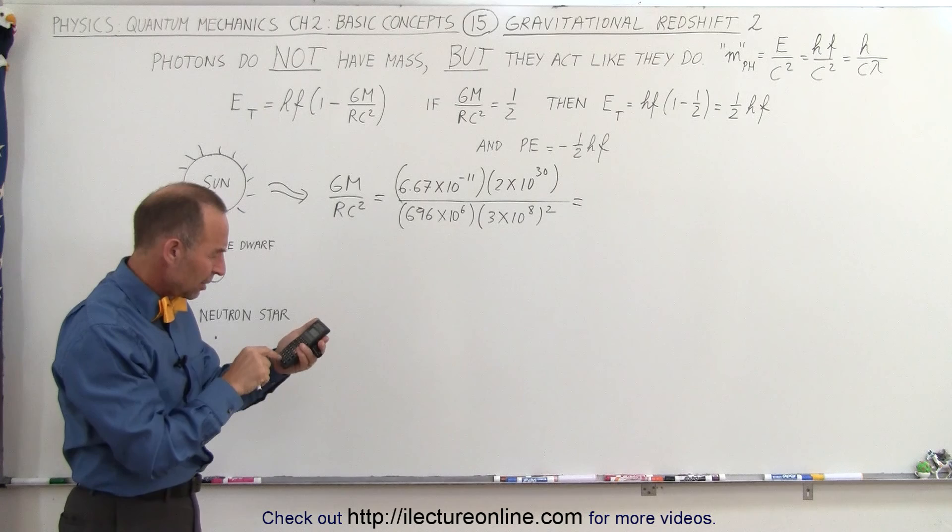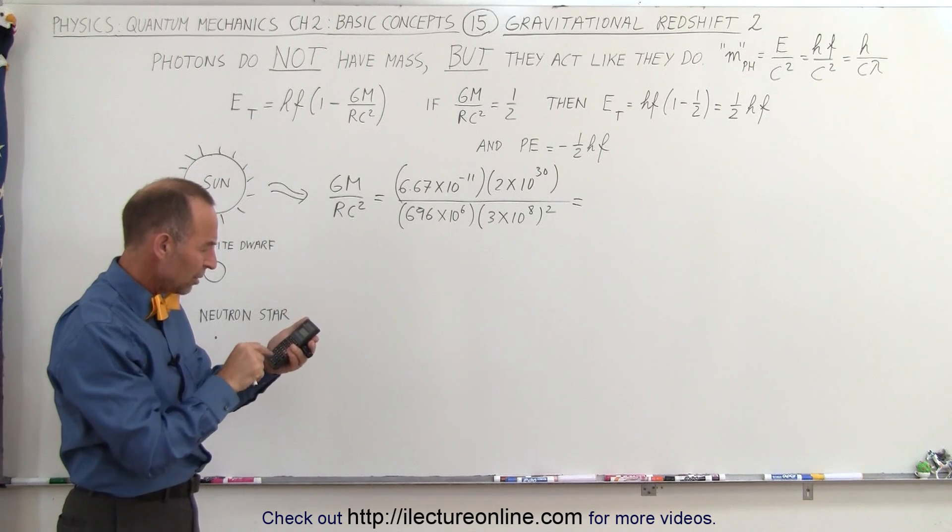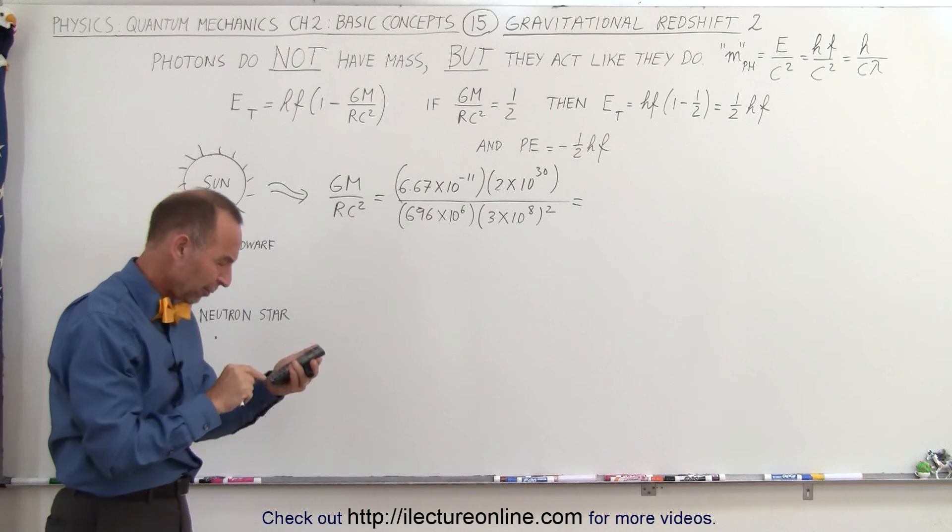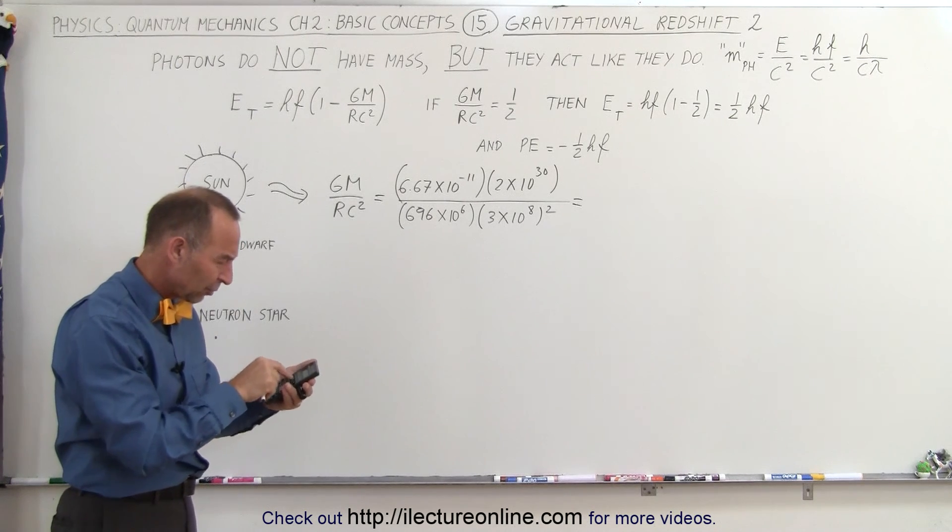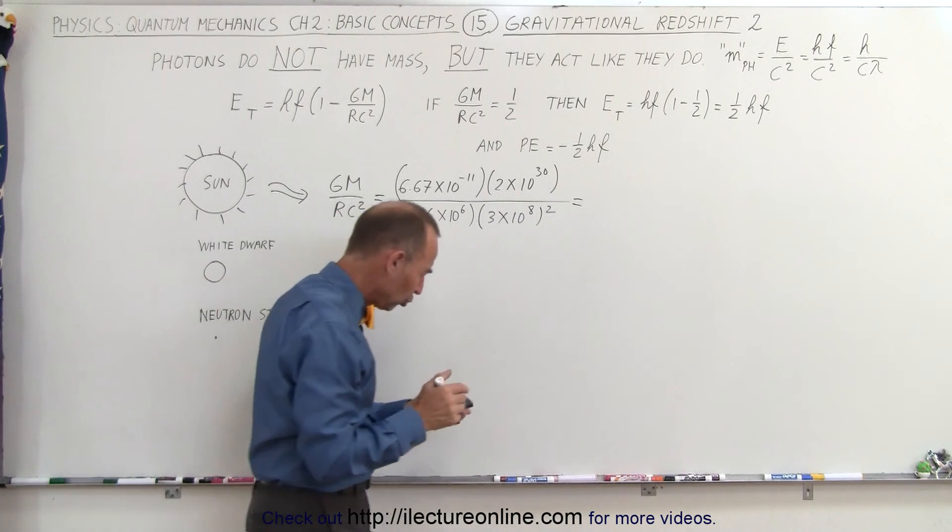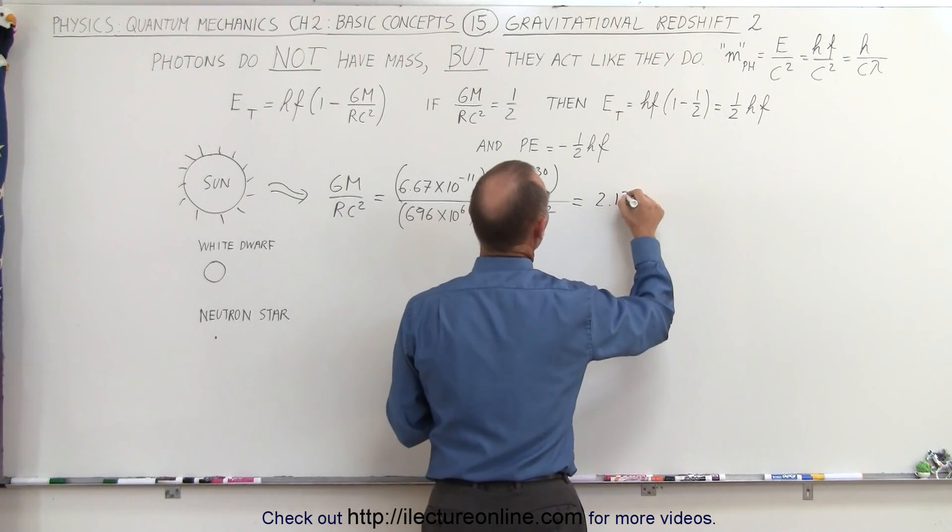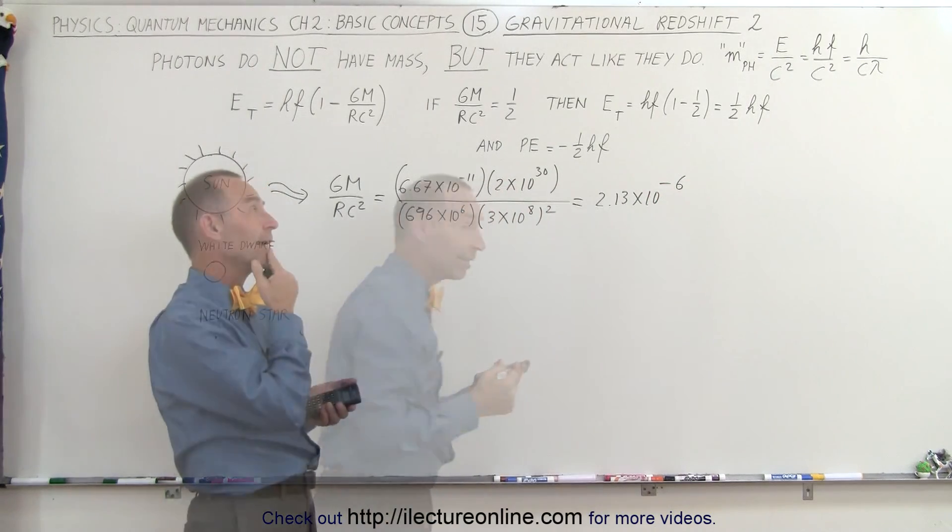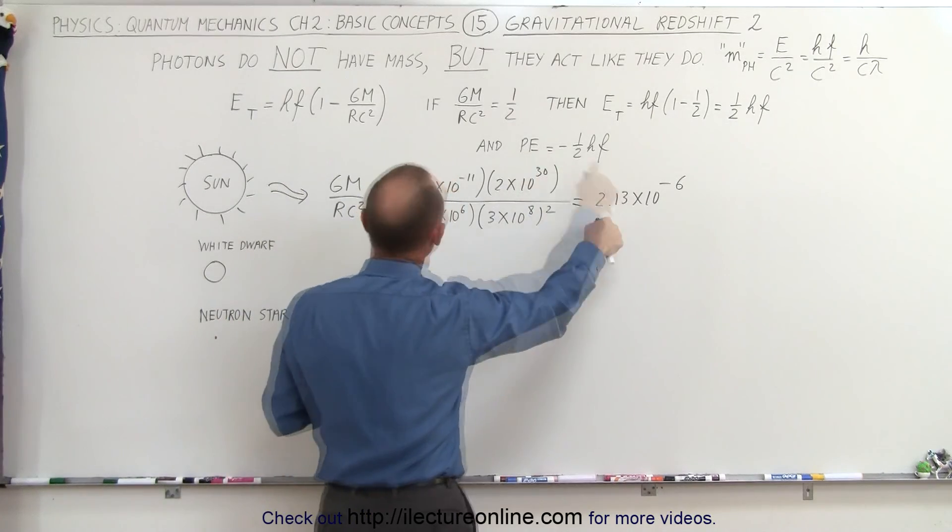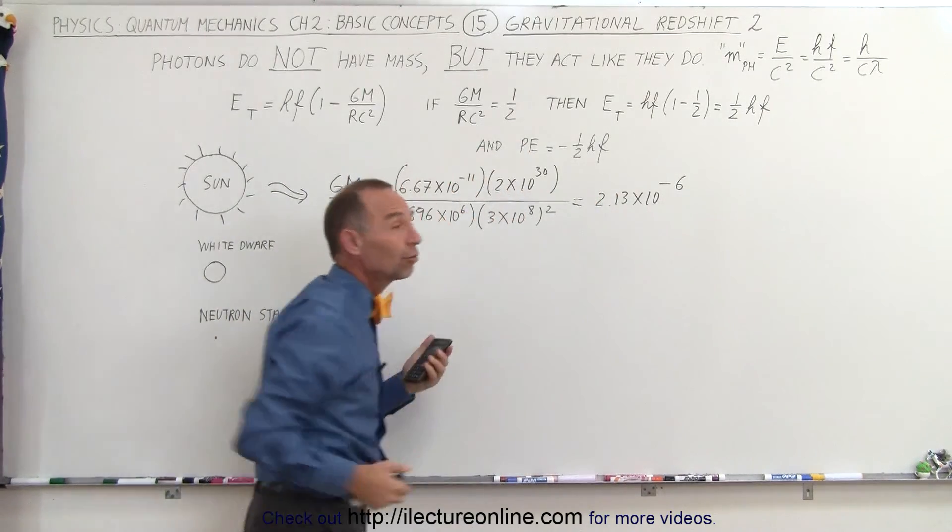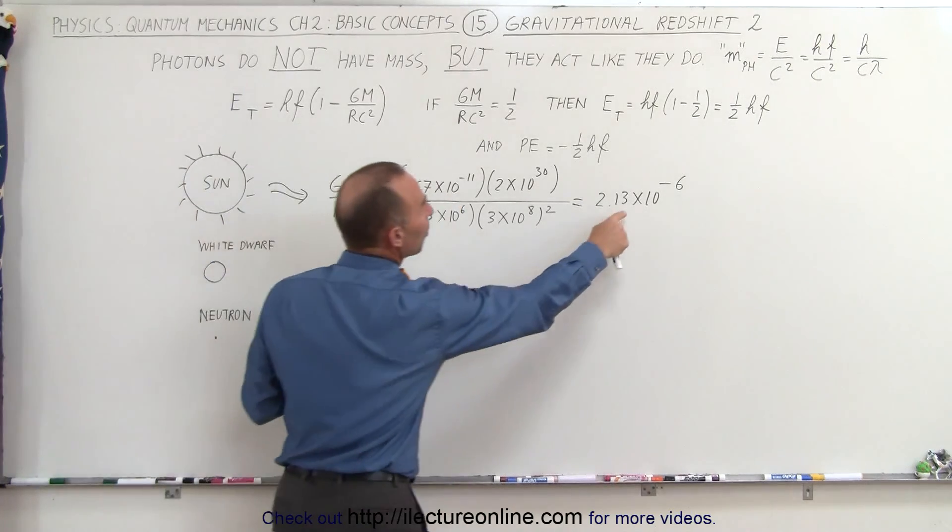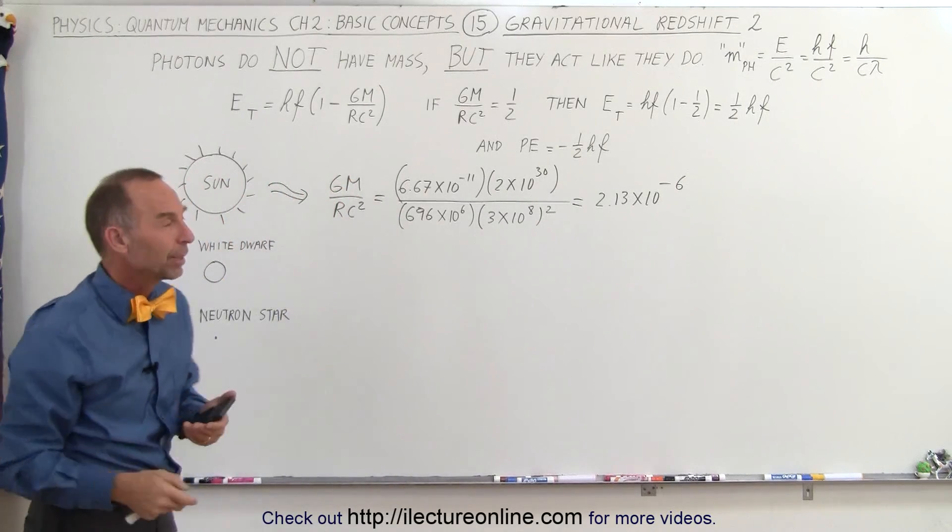6.67 E minus 11 times 2 E 30 divided by 696 E 6, divided by 3 E 8 squared equals 2.13 times 10 to the minus 6th. That's the fraction, the total energy required to get away from the gravitational pull of the sun. Notice it's much smaller than one half, so photons have no problem getting away from the sun.